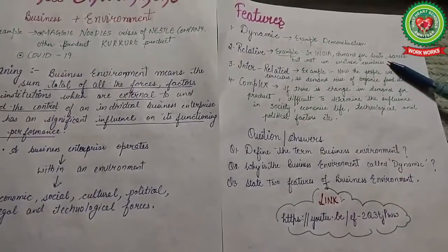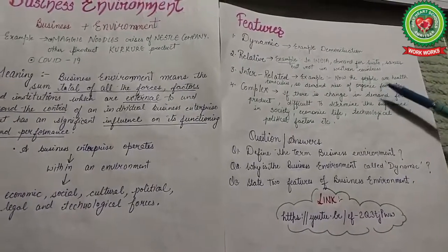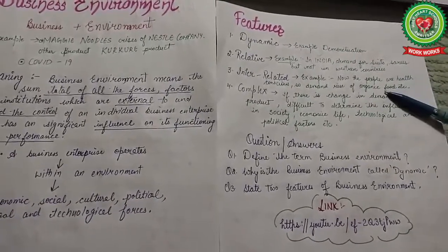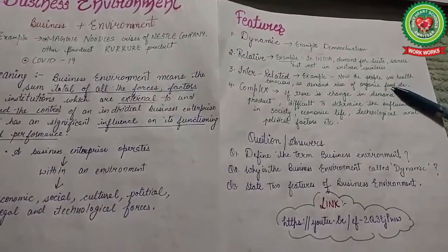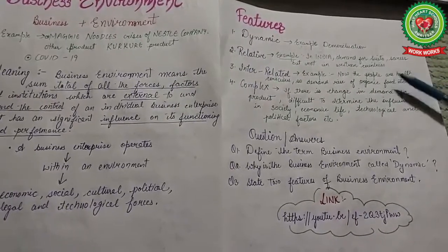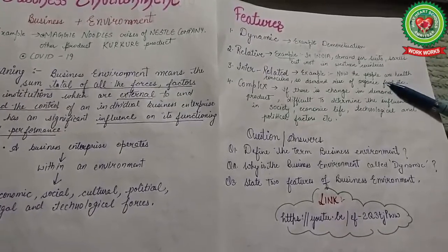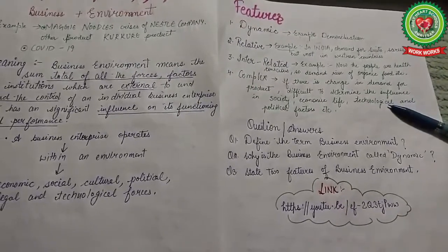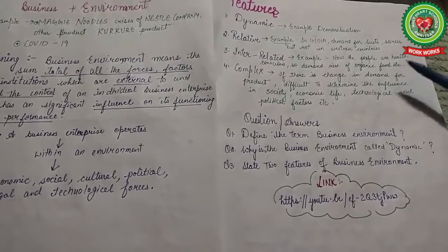The third feature is 'interrelated.' Interrelated means how different forces are related to each other. For example, now people are health-conscious, so they demand organic food. At that time, production of organic food increases more than oily food. This shows how different aspects of the environment are interrelated.